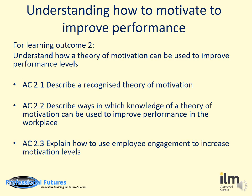AC 2.1 is to describe a recognised theory of motivation. This is where you paint a picture in words on the motivation theory you want to write about — this may well be the Hertzberg theory, it might be Maslow, or any others that you could have researched.